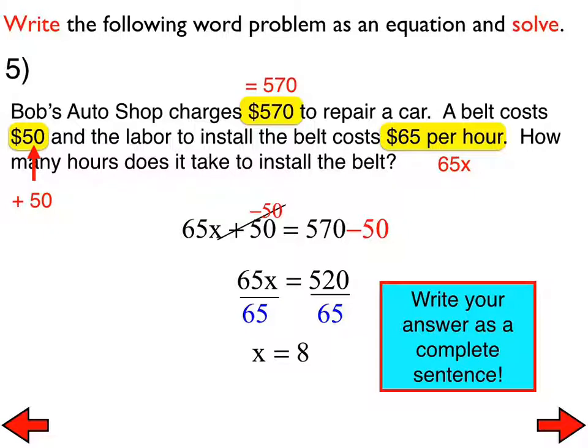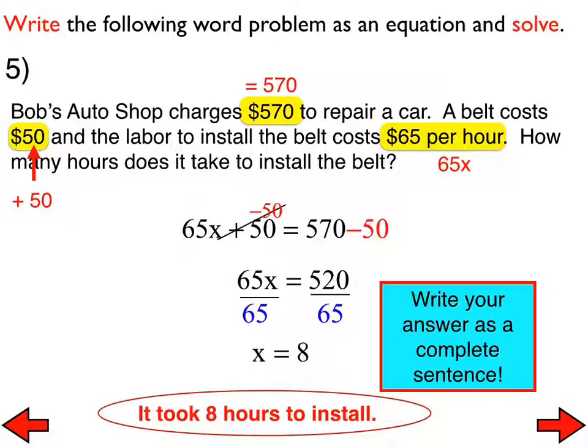What did you put for your answer? It takes 8 hours to install the belt. All right. Very good. It took 8 hours to install is what I put. So make sure when you're doing these word problems, you answer the question with a complete sentence. All right. We are finished.